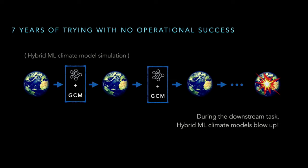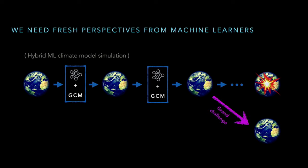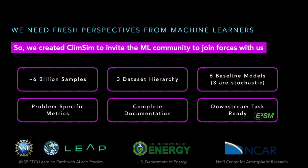This is hardly a new problem. The climate modeling community has been trying this for the past seven years. The real challenge comes when we plug or couple the machine learning emulator inside the climate model — most times, if not every time, it blows up. So over time, this very issue has become the existential problem in the climate modeling community. We need a fresh perspective from you to make a breakthrough. We want machine learners to swarm into this problem and try algorithms that climate scientists have never thought about before. That's why we created ClimSim — to make it as easy as possible for you to come in and try out this problem.